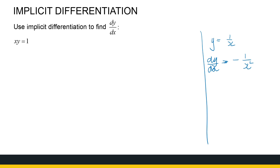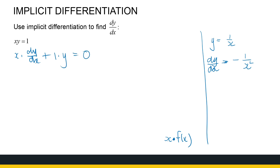We differentiate both sides. Y is a function of x, so we have x times some function of x — it's a multiplication, so we use the product rule. Make sure you know the product rule before looking at this section. The product rule says the derivative of x times y is: first times derivative of second, which is x · dy/dx, plus derivative of x times y, which is y. And the derivative of 1 on the right-hand side is 0.